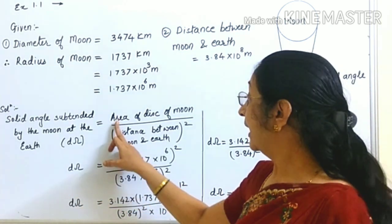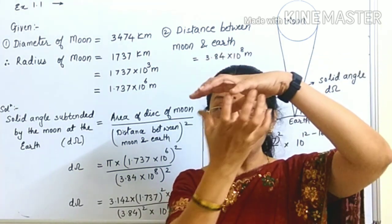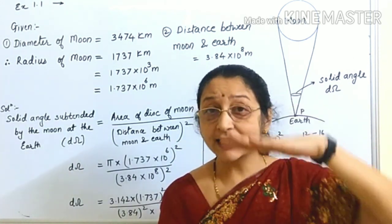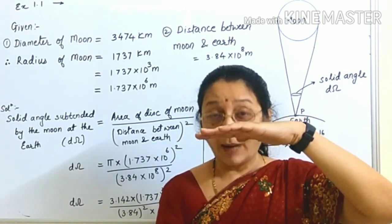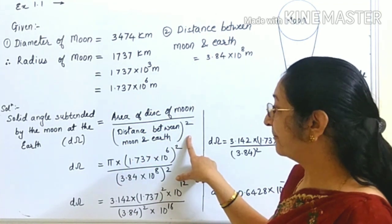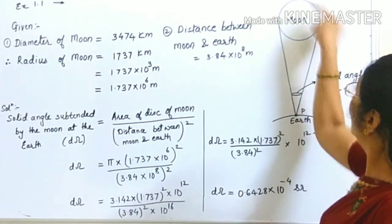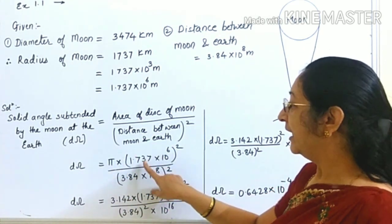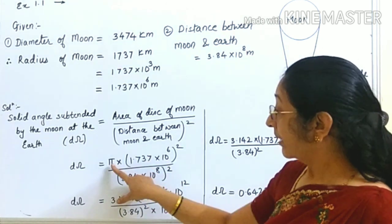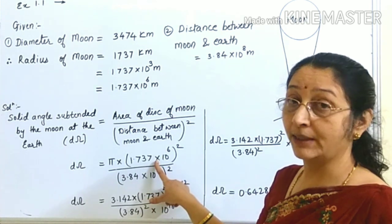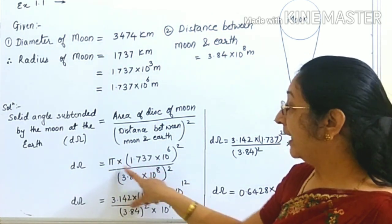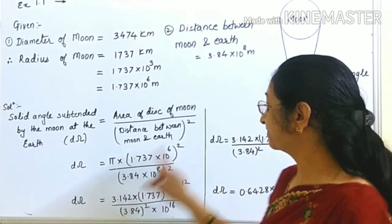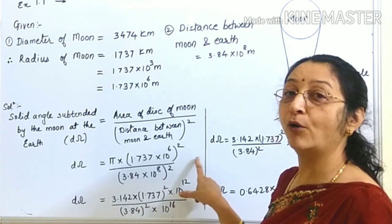So we have dΩ = area / r², where the area of the disk is π times the radius of the moon squared. Substituting, we get: π × (1.737 × 10⁶)² divided by (3.84 × 10⁸)².